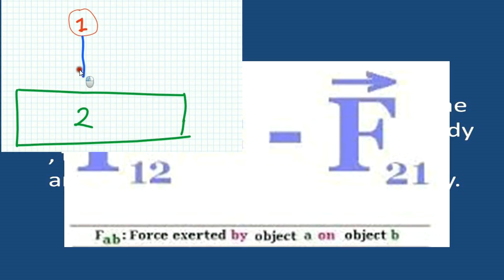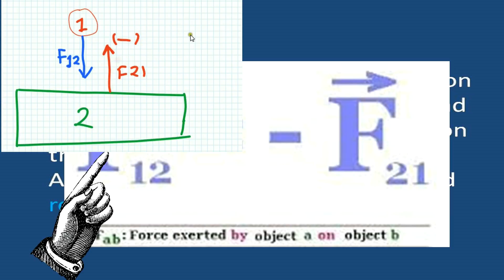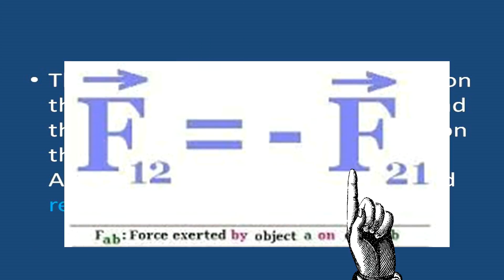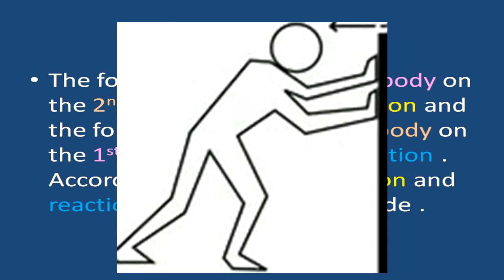We can also state this law as an interaction between two bodies: one body exerts a force on another body, and the second body exerts an equal and opposite force on the first body. The force exerted by the first body on the second body is known as action, and the force exerted by the second body on the first body is known as reaction. According to this law, action and reaction are equal in magnitude.